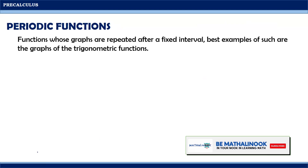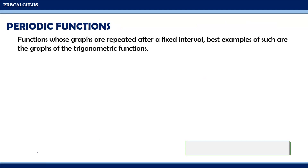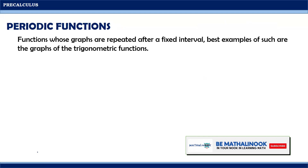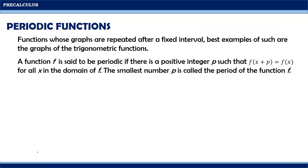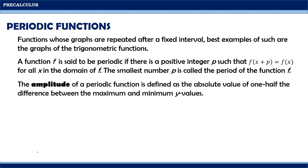Periodic functions are functions whose graphs are repeated after a fixed interval. Best examples of such are the graphs of the trigonometric functions. A function f is said to be periodic if there is a positive integer p such that f(x + p) = f(x) for all x in the domain of f. The smallest number p is called the period of the function f. The amplitude of a periodic function is defined as the absolute value of one-half the difference between the maximum and minimum y values.